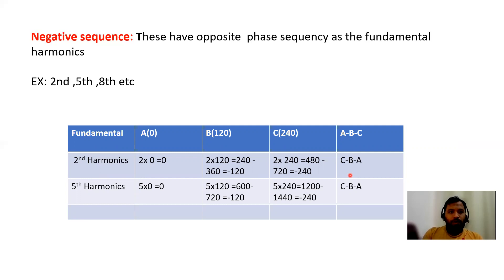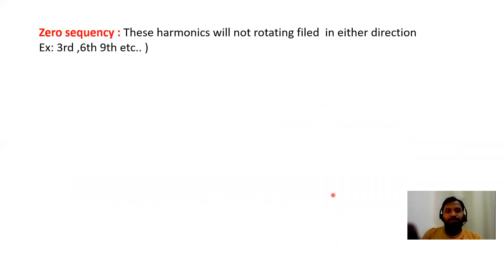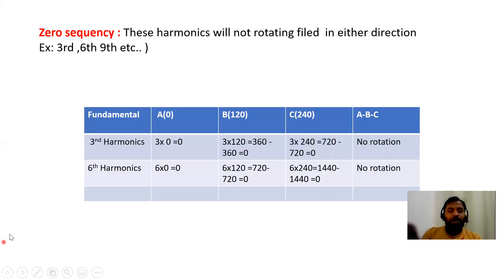Zero sequence harmonics are those which cannot rotate either positive or negative. These are the triplen harmonics — 3, 6, 9, etc. For the 3rd harmonic: 3×0=0, 3×120=360−360=0, 3×240=720−720=0. No rotation. Similarly for the 6th harmonic: 6×0=0, 6×120=720→0, 6×240=1440→0. All phases are zero, so these are called zero sequence harmonics.